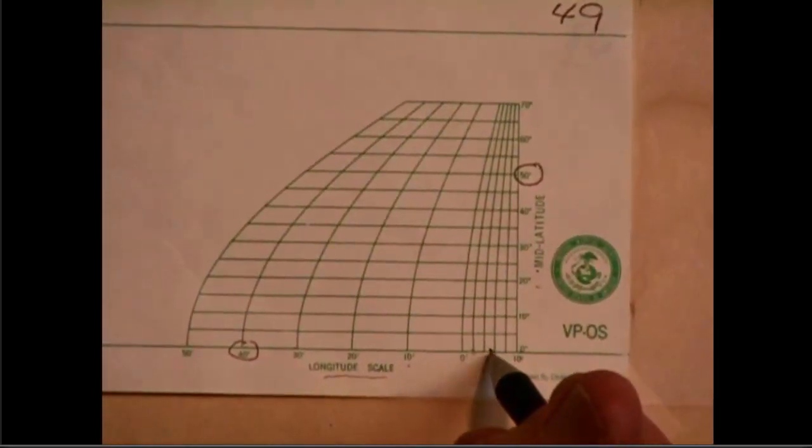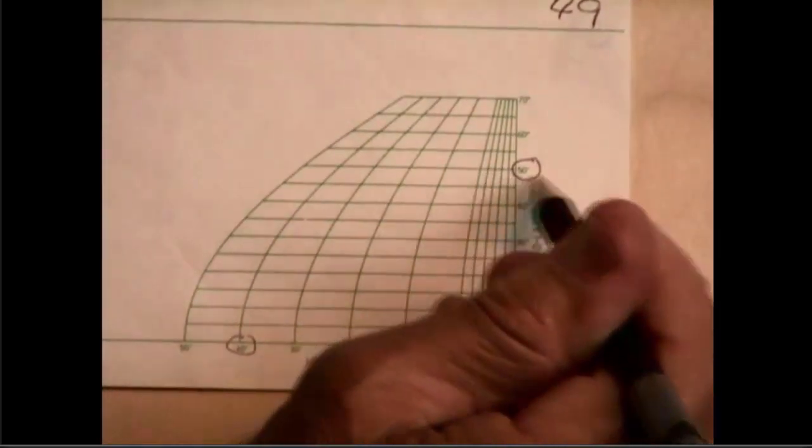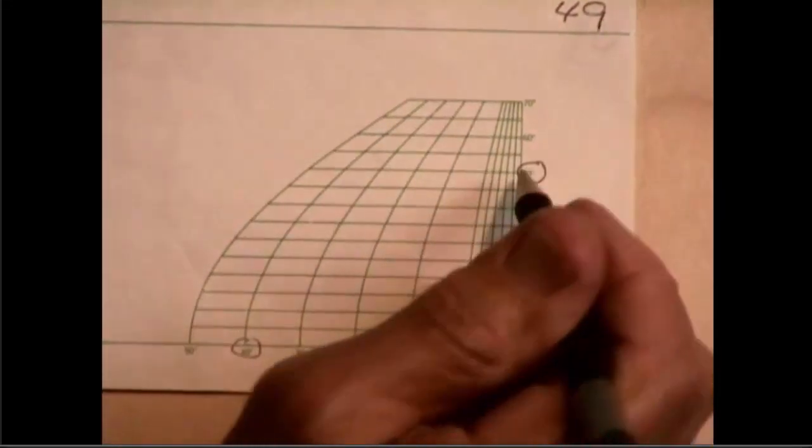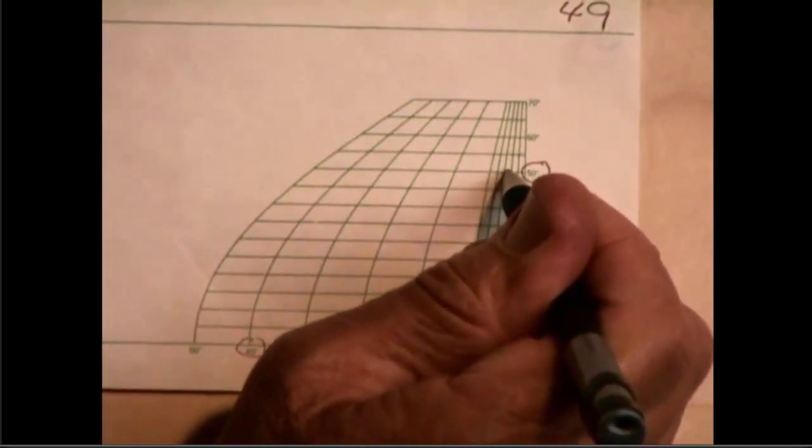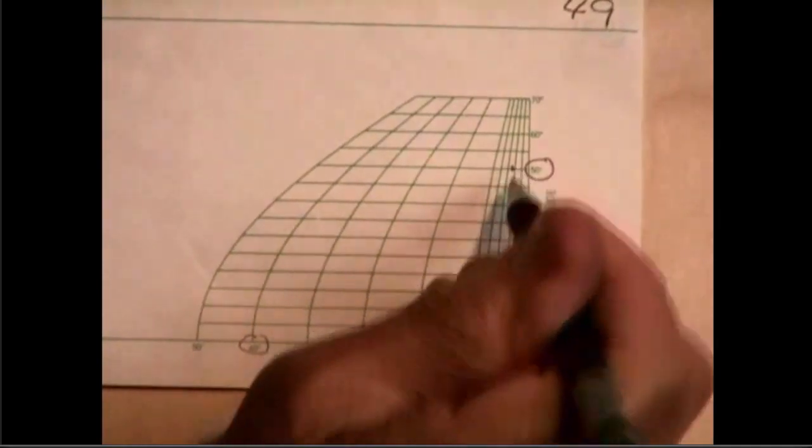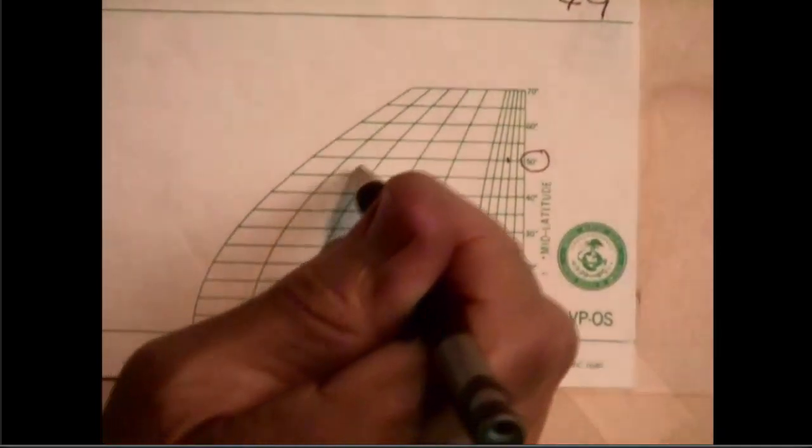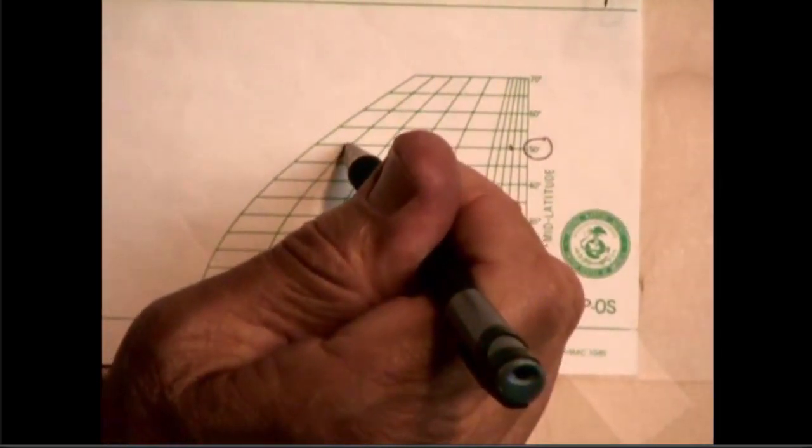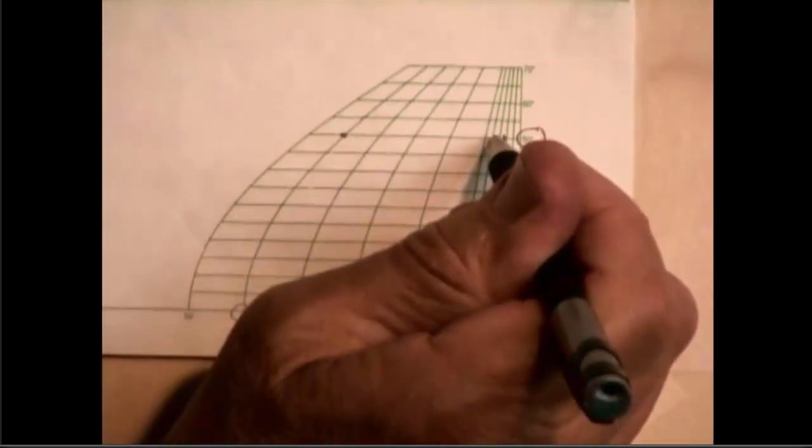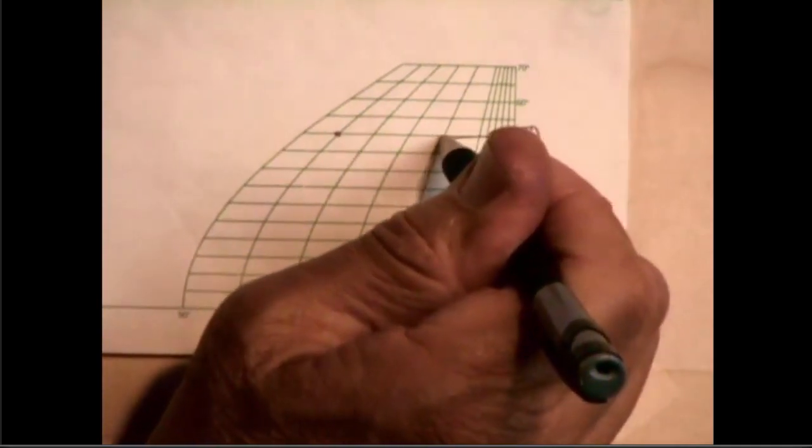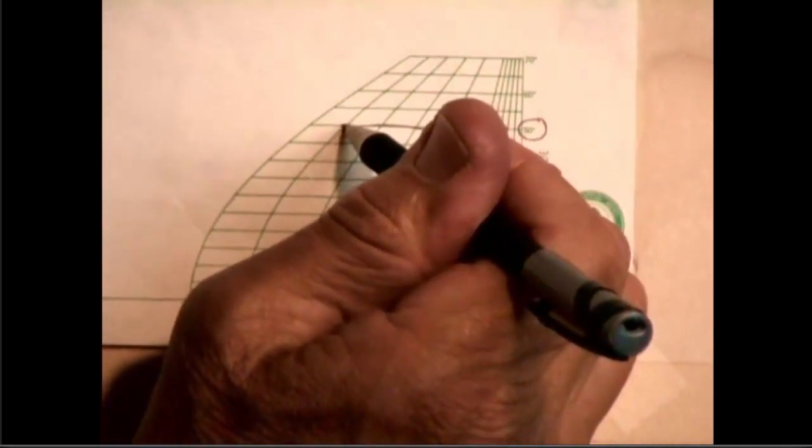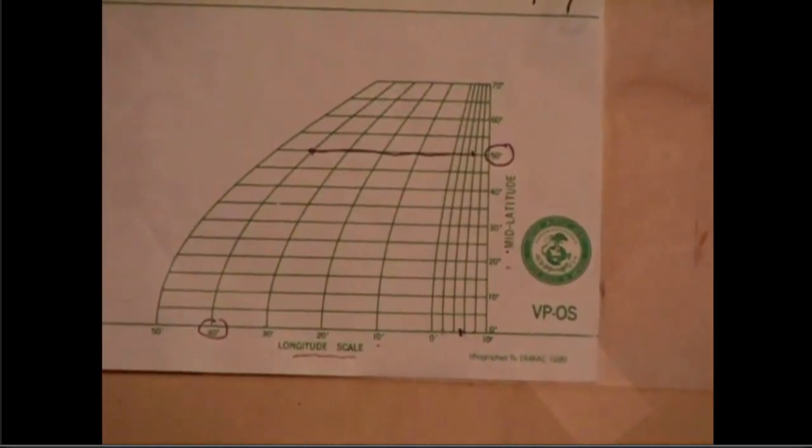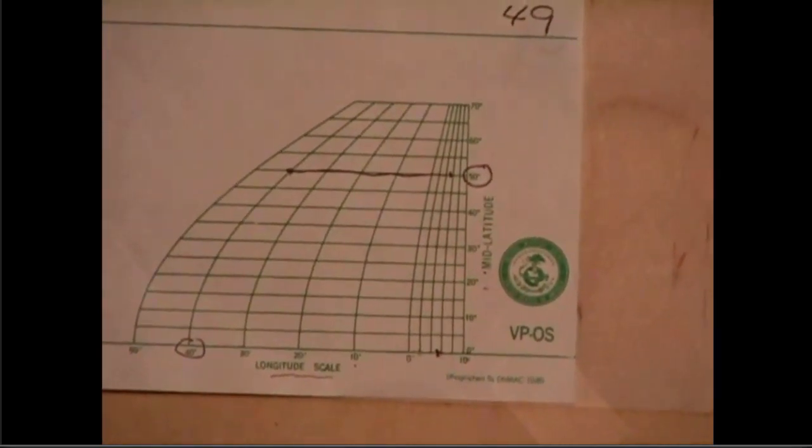But if I take this point and project it up to this 50 degree latitude line, I would go from this point to let me follow it to this point. And the length of this line then represents 45 minutes of longitude at 50 degrees of latitude.